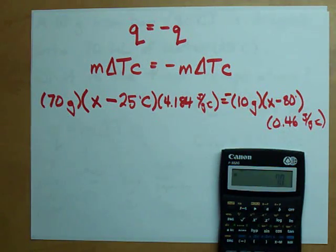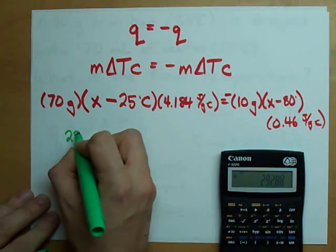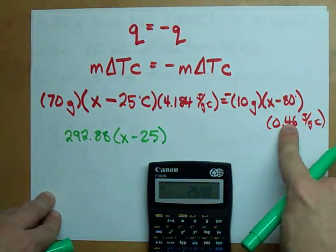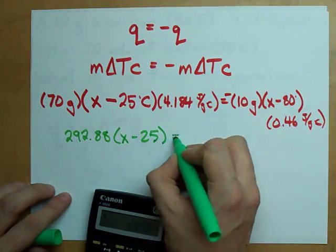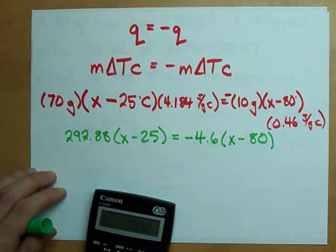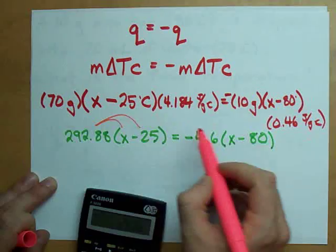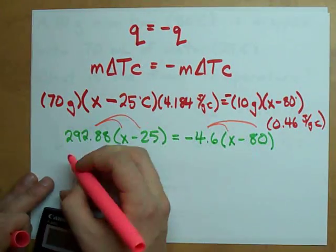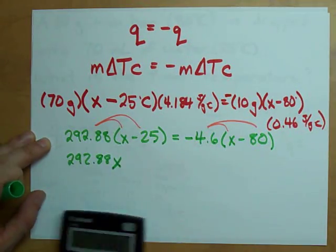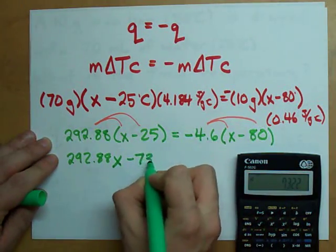70 times 4.184 gives me 292.88. And 10 times 0.46 ends up giving me 4.6. Now, I've dropped the units just so you can see. This is clearly just a linear equation. The way that we end up solving this is to multiply these numbers through the brackets. Let's do that now.